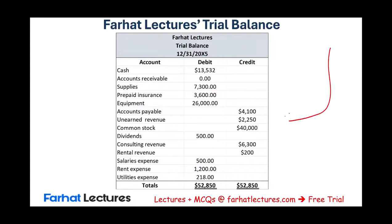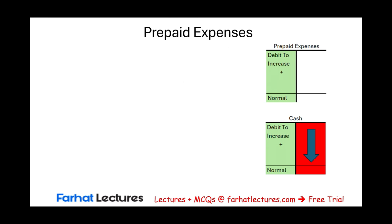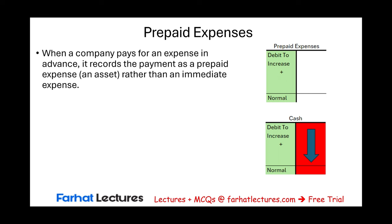This is the trial balance that we prepared in the prior session. You can view the prior session to see how we analyzed and recorded transactions to arrive at all these balances. For this session we are going to adjust the prepaid expenses. A prepaid is when a company pays for an expense in advance and records the payment as a prepaid — an asset — rather than an immediate expense.